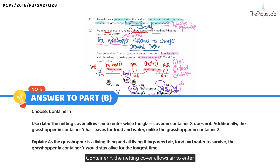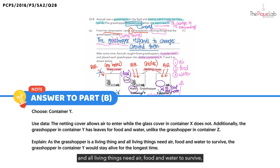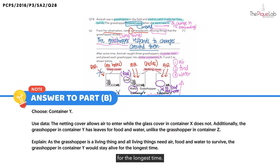So this is how I will phrase the answer for Part B. Container Y. The netting cover allows air to enter, while the glass cover in container X does not. Additionally, the grasshopper in container Y has leaves for food and water, unlike the grasshopper in container Z. As the grasshopper is a living thing and all living things need air, food and water to survive, the grasshopper in container Y would stay alive for the longest time.